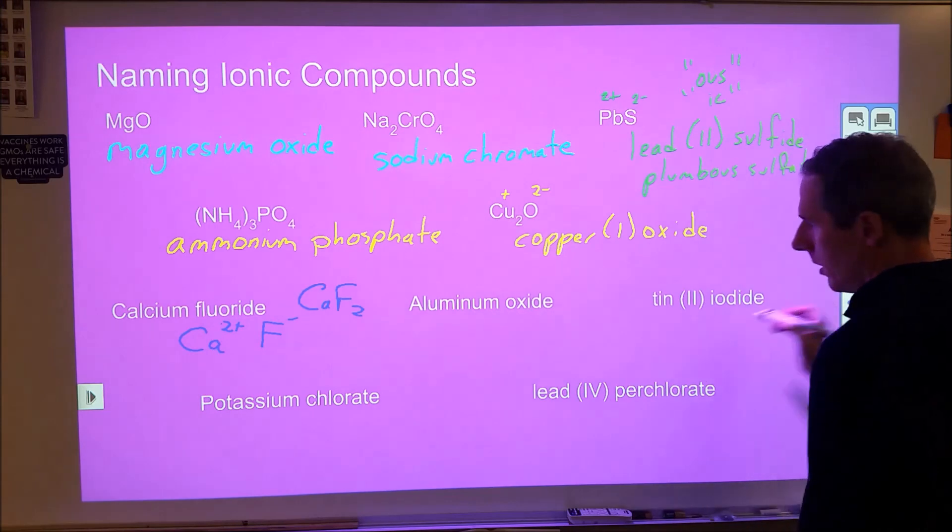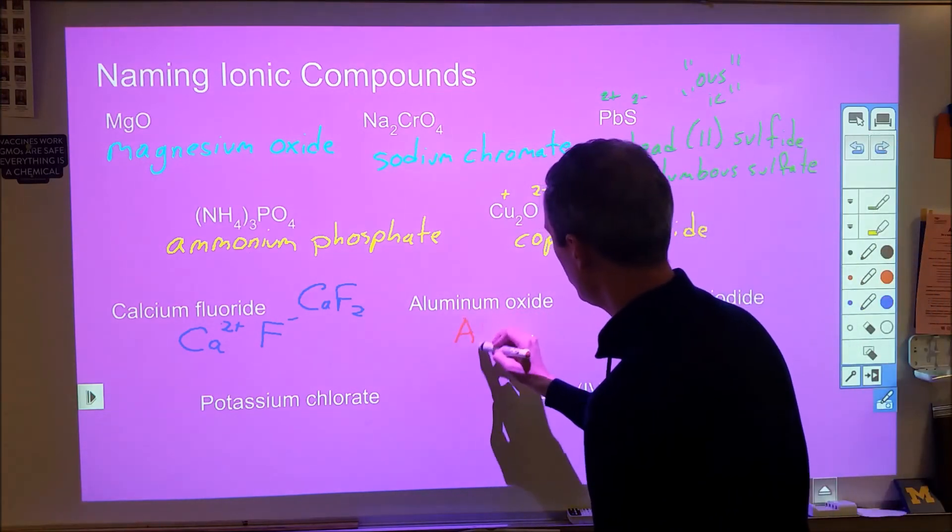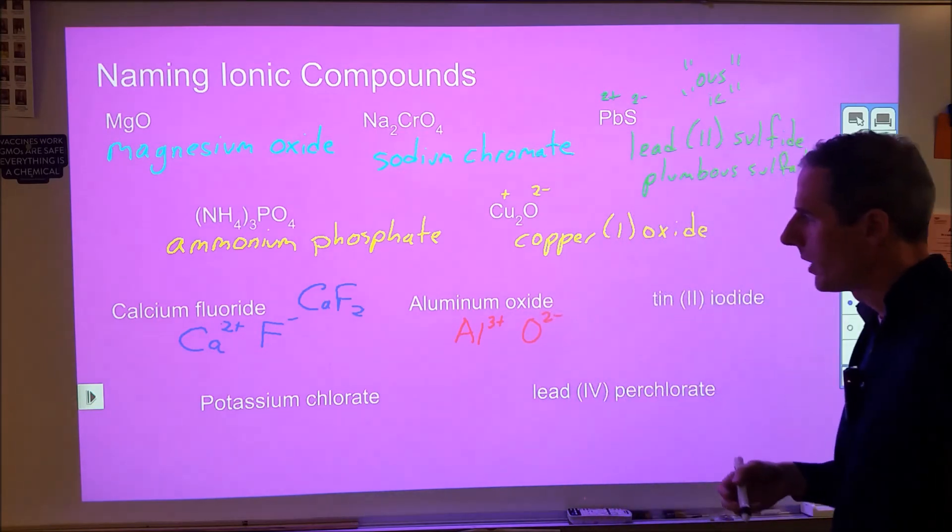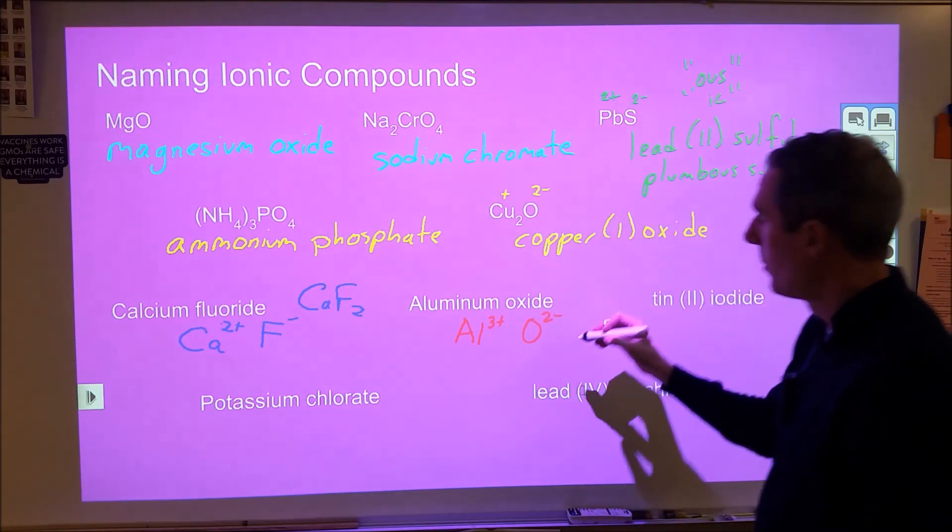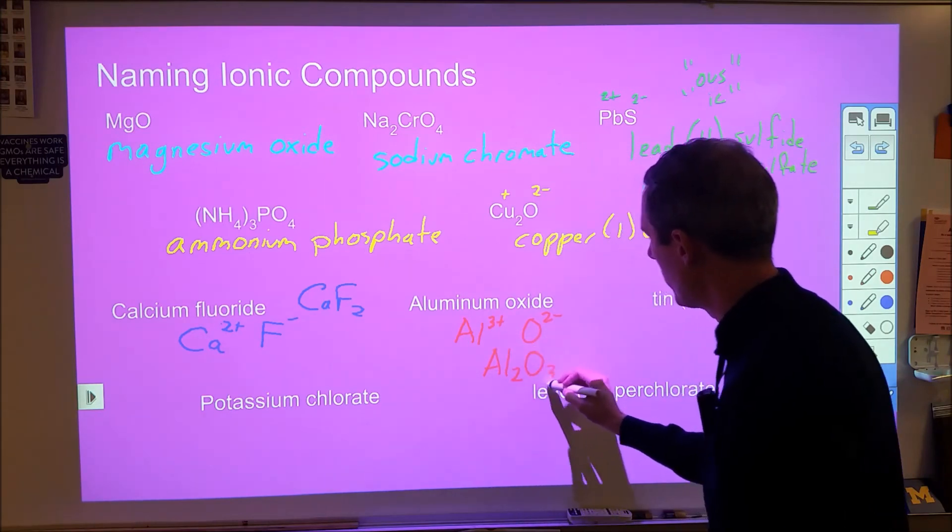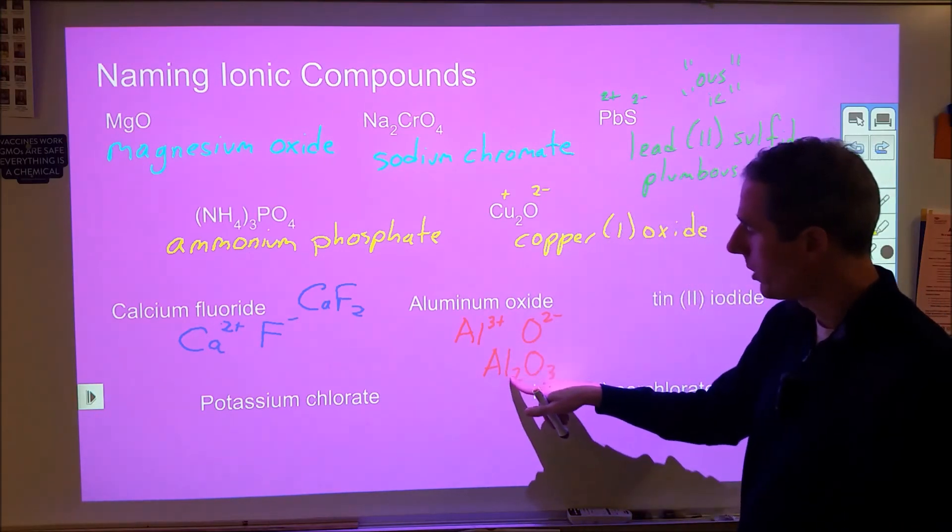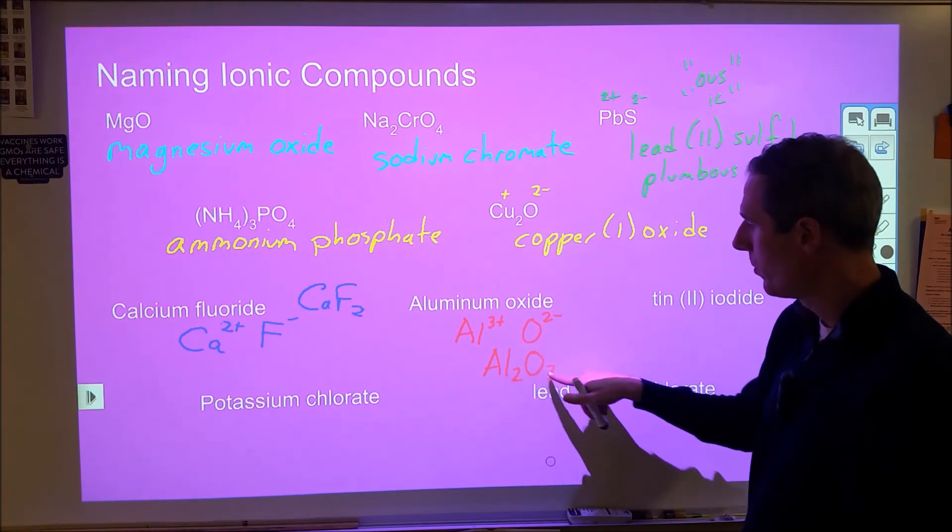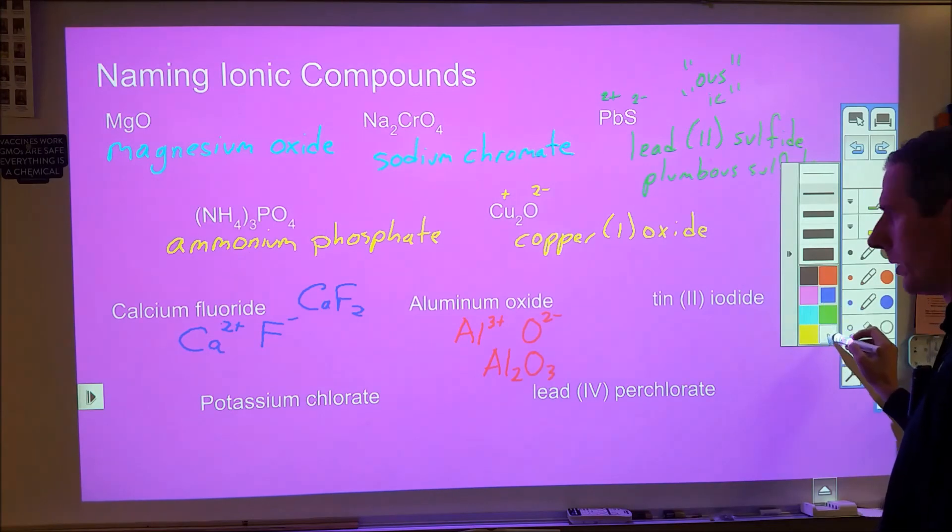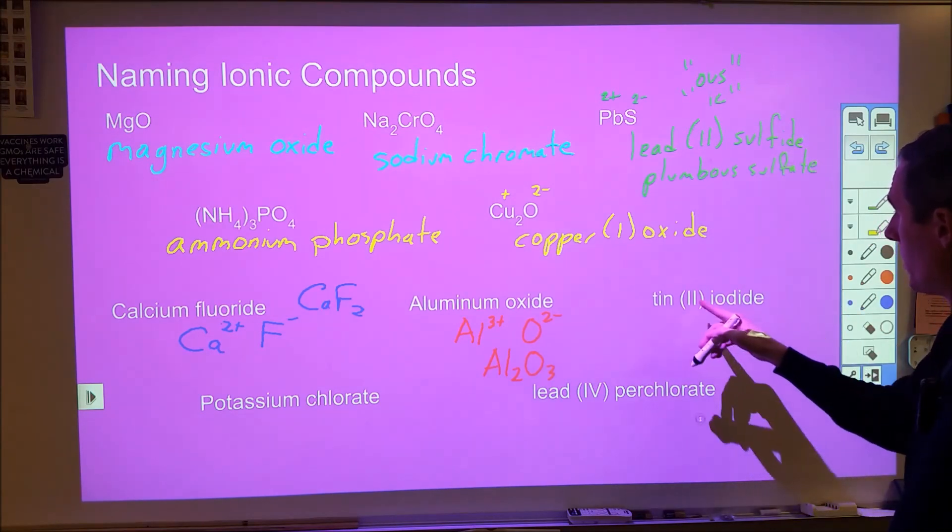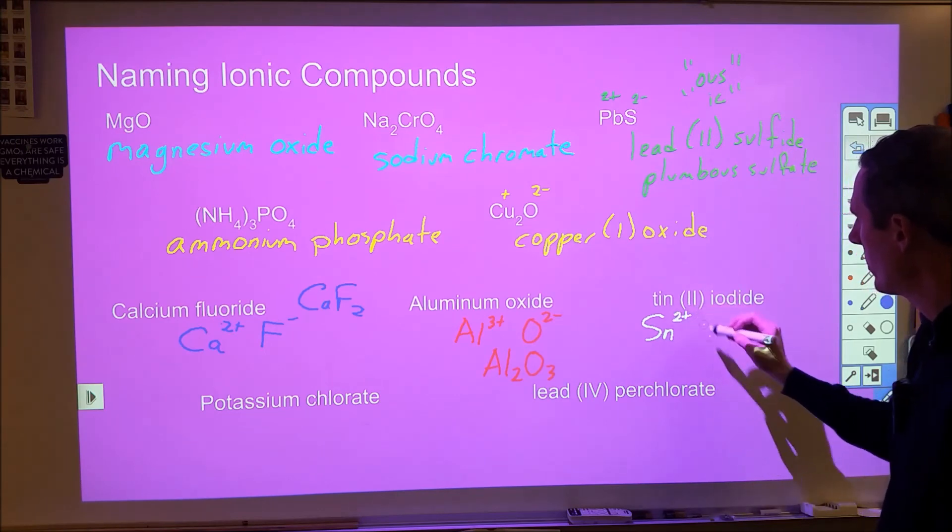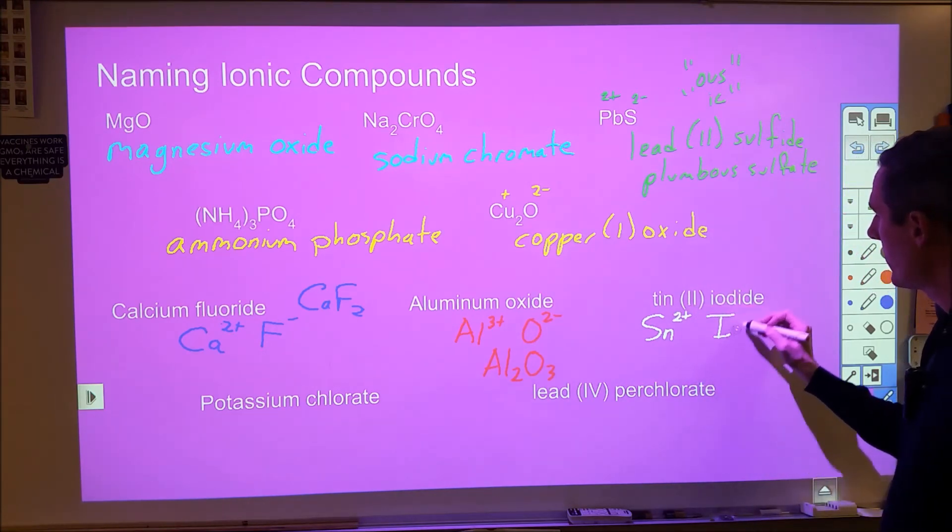Aluminum oxide so if we look up aluminum it is a 3+ charge based on its column that's on the periodic table oxygen is 2- so our formula here we would end up with two aluminums for every three oxygens so that's two 3+ charges that's six plus three 2- charges which is six minus.